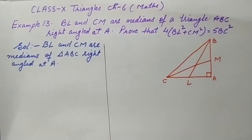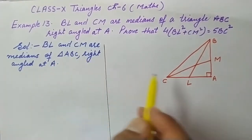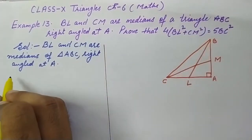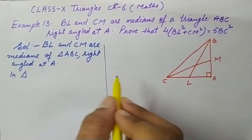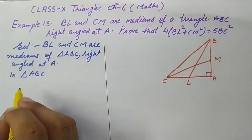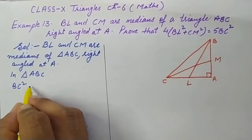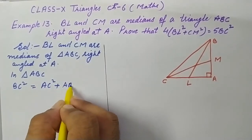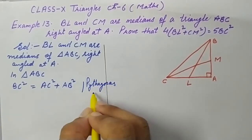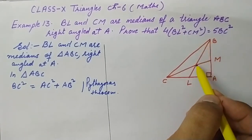Given: BL and CM are medians of triangle ABC, right angled at A. First, in right angle triangle ABC, by Pythagorean theorem, BC² = AC² + AB², where BC is the hypotenuse. This gives us equation 1.